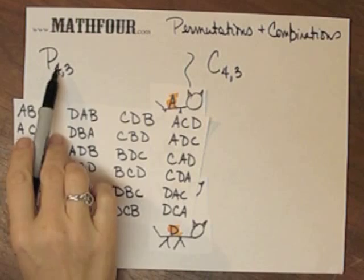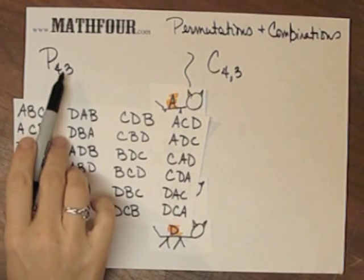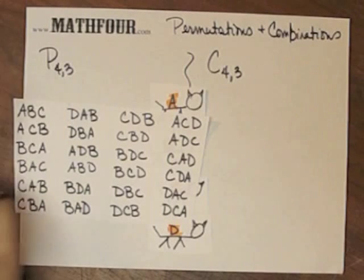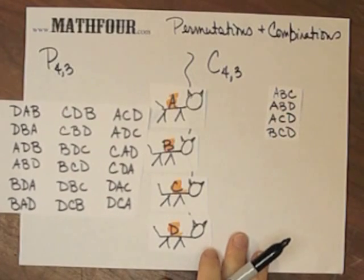So my goal is to get the number 24, because this really means how many different ways can I choose out of four, three things. And over here I have four, so that's the difference.